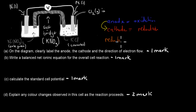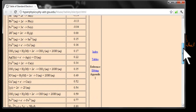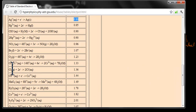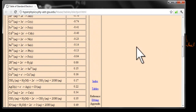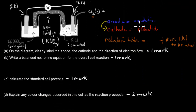The more positive the reduction potential, the more likely a species is to be reduced. We compare chlorine gas and nickel. Chlorine gas is very electronegative — it loves grabbing electrons — and has a reduction potential of +1.36 V. Nickel has a reduction potential of −0.23 V, so nickel is much more likely to give away electrons. Therefore, chlorine gas is at the cathode.